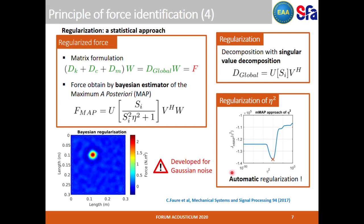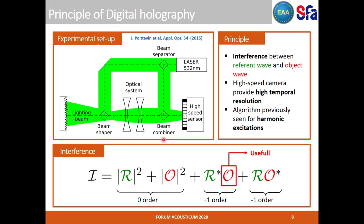Recently, our group proposed a regularization based on a statistical approach. This approach uses a matrix formulation of spatial derivatives to simplify the expression of the movement. By using a Bayesian approach and knowing the power spectral density of the noise from the measurements, the Bayesian force estimator can be expressed as this equation. This formulation is in fact a regularization of the spatial derivation by modifying the singular values of the derivation matrix after decomposition. This modification is made by a factor eta squared to be determined, which can be found by minimizing a cost function. The position of the force is then retrieved, and this regularization process is automated without requiring any manual adjustments.